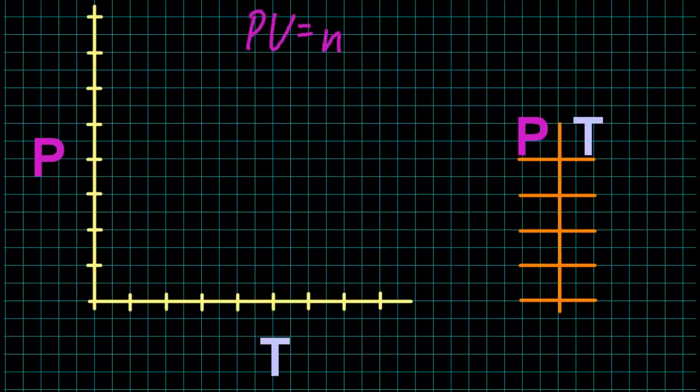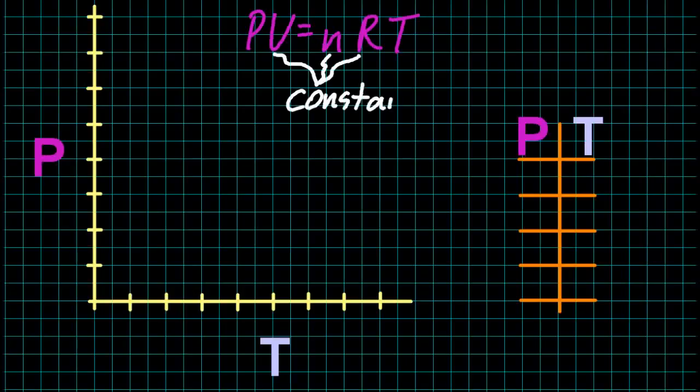Alright then, so PV equals nRT, that's the ideal gas equation. We're looking at P and T. So that means that volume, number of moles and gas constant, they're all going to be unchanging. I'm just looking at how P changes with T. Everything else I'm going to keep the same.